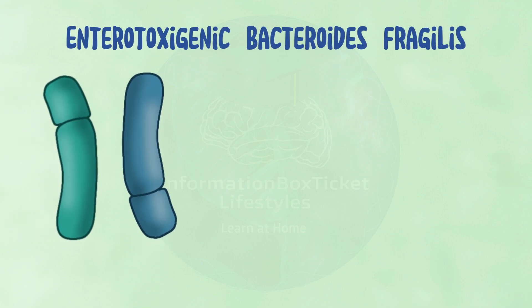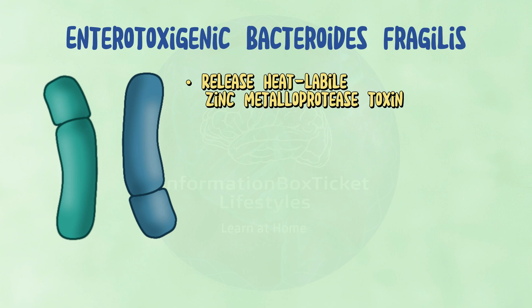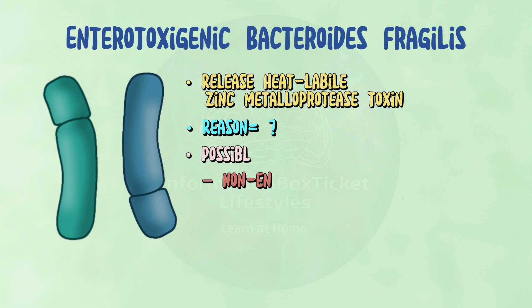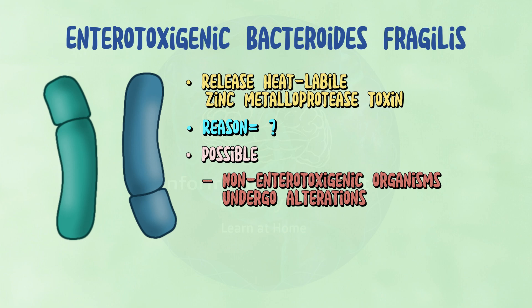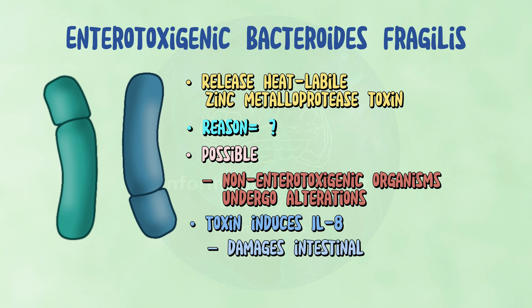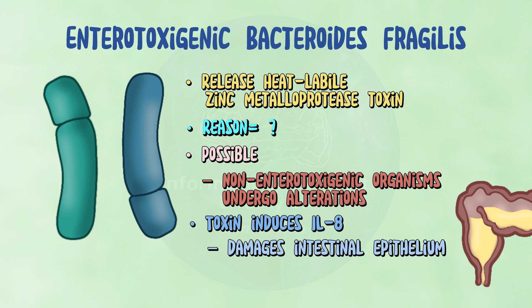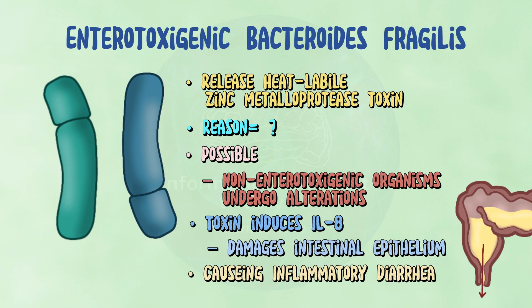Certain Bacteroides fragilis strains, known as enterotoxigenic Bacteroides fragilis, release a heat-labile zinc metalloprotease toxin. The reason for this is unknown; however, non-enterotoxigenic organisms that ordinarily live in the colon may undergo alterations that increase their virulence. This toxin induces the release of IL-8, a pro-inflammatory cytokine that damages the intestinal epithelium, resulting in the discharge of fluid and chloride into the intestinal lumen, producing inflammatory diarrhea.